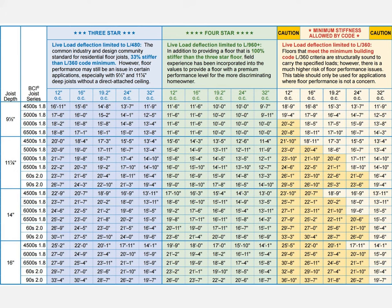Engineered lumber manufacturers provide load tables or span tables to size members for various situations. Here is one example representing a very common design scenario: residential floors with a dead load of 10 psf and a live load of 40 psf. The table provides three deflection criteria: the standard L/360, a three-star criterion of L/480, and a more stringent option.